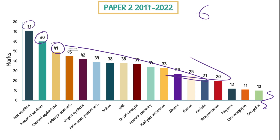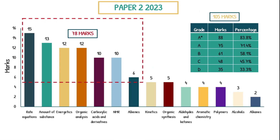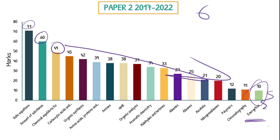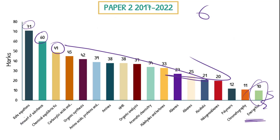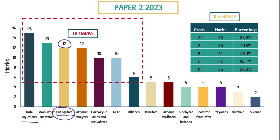Now let's look at 2023 and see how things changed. Just like paper one, things did not change much. The only thing that was a bit surprising was energetics — they threw in 12 marks there, whereas there were only 10 marks in energetics across the prior six years. But across the board things remain constant. Rate equations was number one with 15 marks, amount of substance was 13 marks. The top two topics in the historical data were still the top two topics in 2023. They also threw in organic analysis, carboxylic acids, NMR, and alkenes among the top topics.